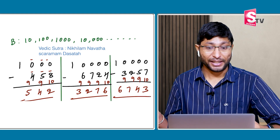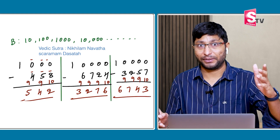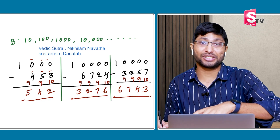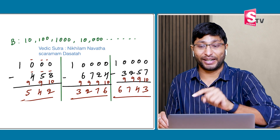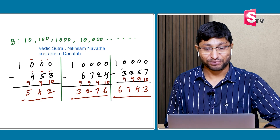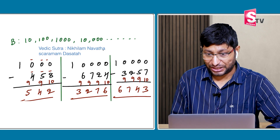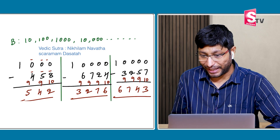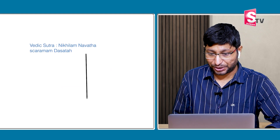How simply I am solving it! If you want to do borrowing, you know how difficult that is. Compare doing borrowing versus solving directly using all from 9, last from 10. I hope you already understood the simplest way of calculation. Let me give you some more examples for more clarity on this concept.